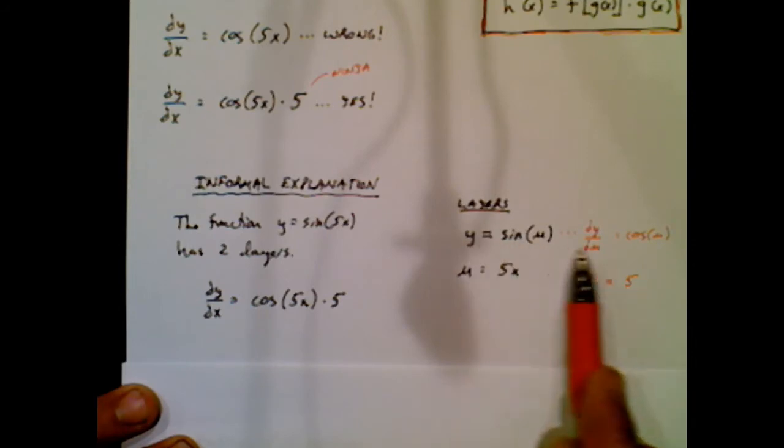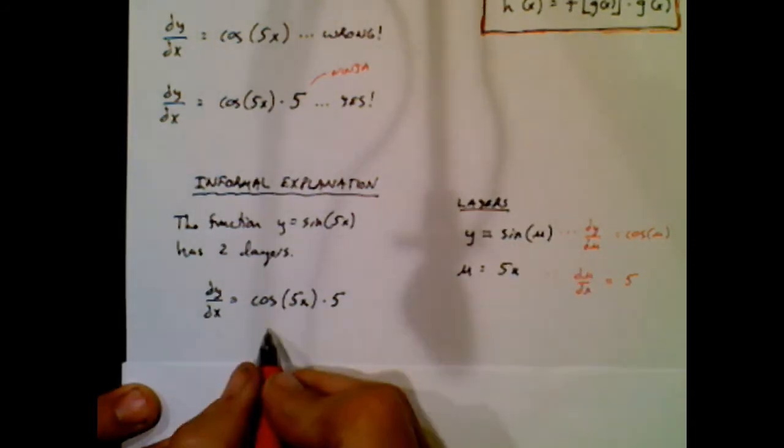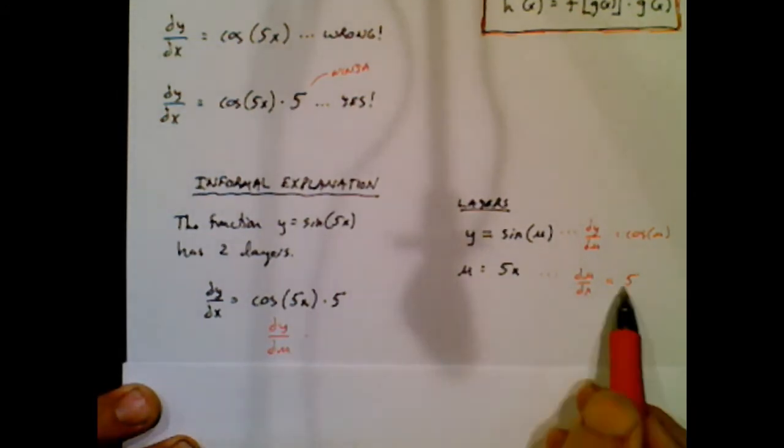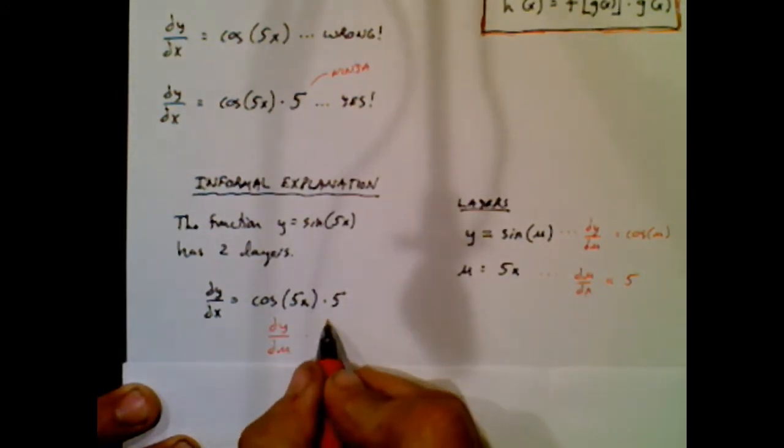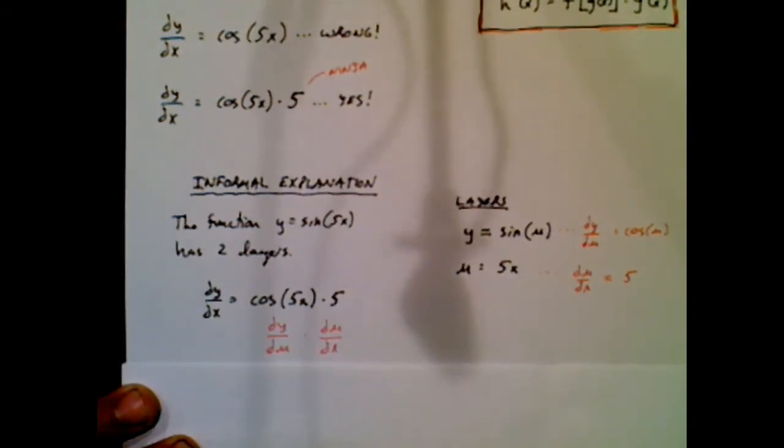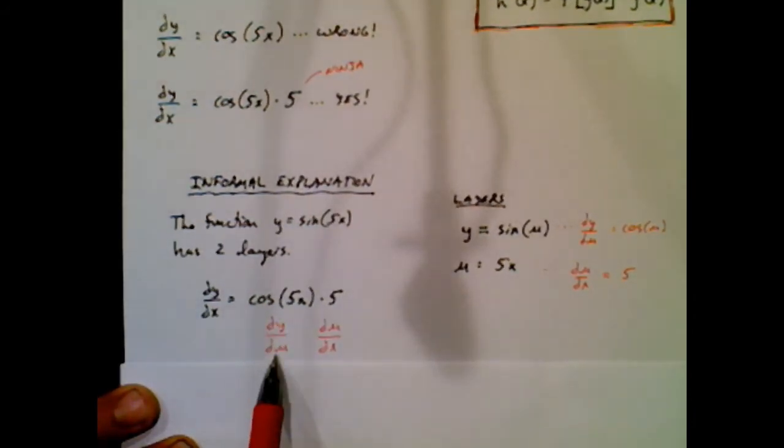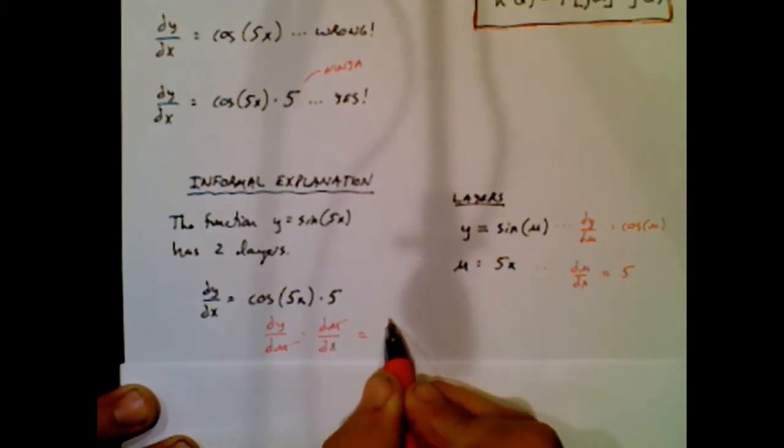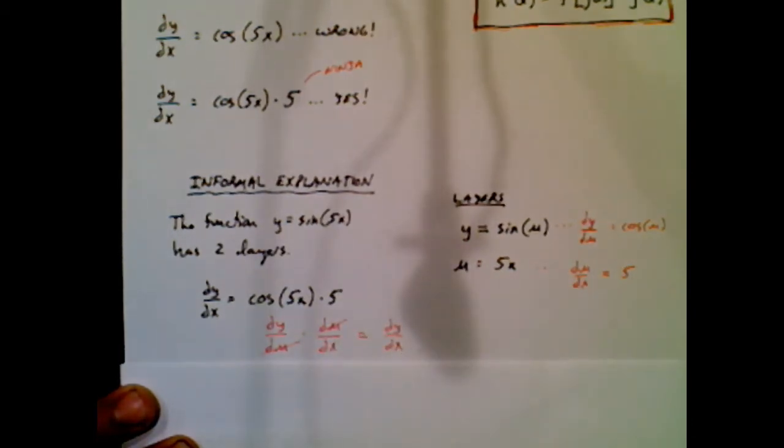Well, that first layer has a dy/du for a symbolism. So I'm going to write that right underneath there. And holy moly, you might notice this. If I multiply these symbols, this in the denominator cancels with this in the numerator, and I get a dy/dx. So the symbolism works out.